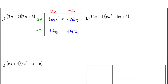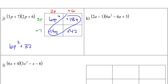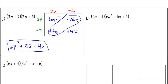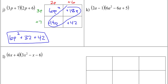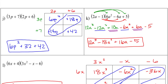Now we look for like terms: we have a p squared term, a constant, and these two middle terms. Dropping down in standard form: 6p squared, then 14 plus 18 gives 32p, plus 42. Go ahead and pause the video - try these two on your own - then come back and see what I got.